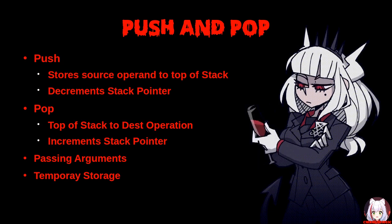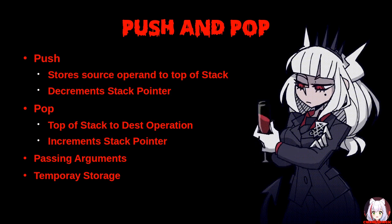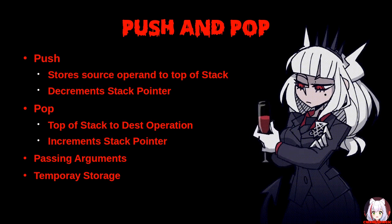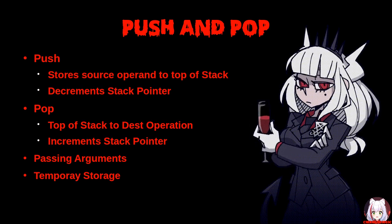Push and pop: the PUSH instruction decrements the stack pointer, then stores the source operand on top of the stack. The address size attribute of the stack segment determines the stack pointer size (16 or 32 bits), and the operand size attribute determines the amount the stack pointer is decremented (2 or 4 bytes). The POP instruction, in contrast, loads the value from the top of the stack to the destination operand, then increments the stack pointer. The destination operand can be a general purpose register, memory location, or segment register. Push and pop are typically used for passing arguments and temporary storage.